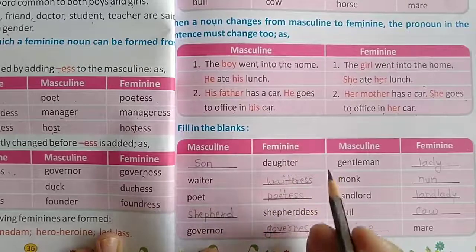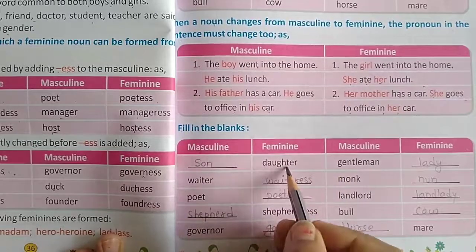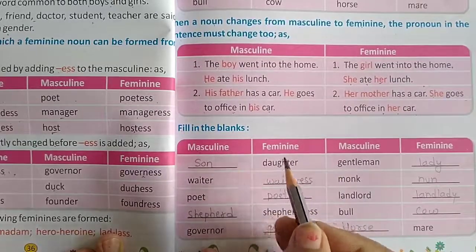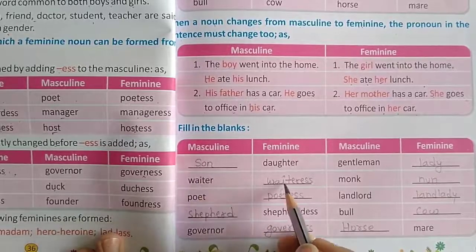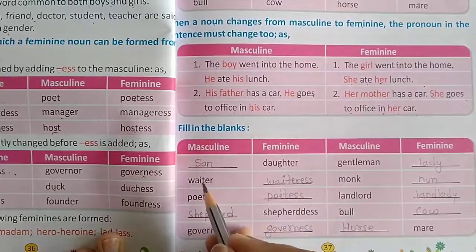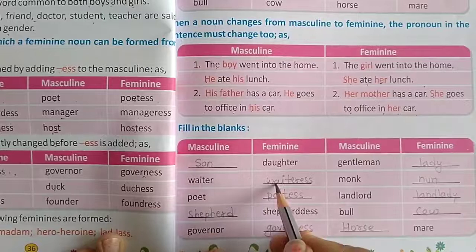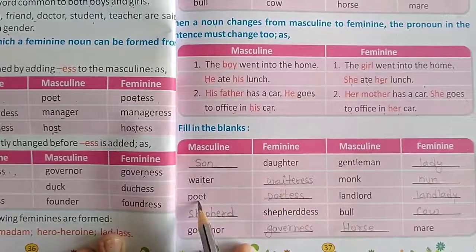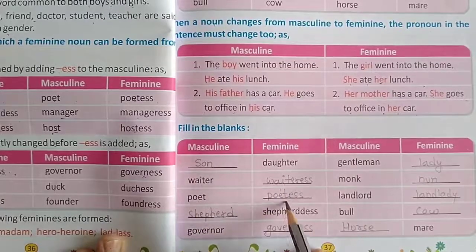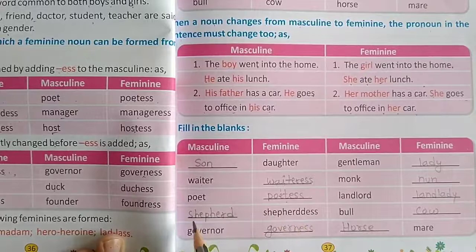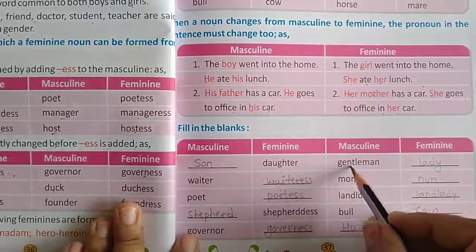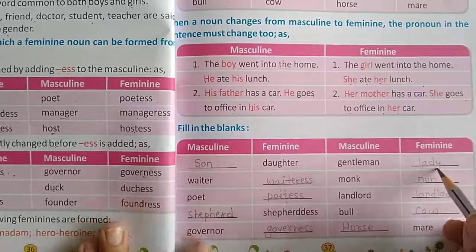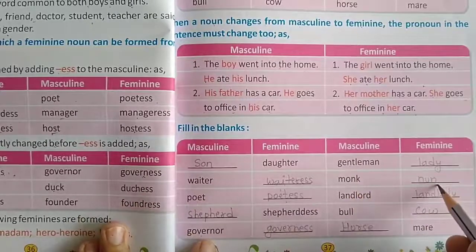For example, daughter is a feminine gender and the masculine of daughter is son. Waiter is a masculine gender and its feminine is waitress. Other pairs include: poet and poetess, chef and cheftress, shepherd and shepherdess, governor and governess, gentleman and lady, monk and nun.